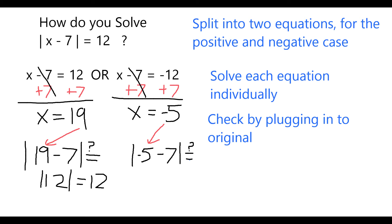In the other case, if I plug in negative 5, negative 5 minus 7 equals negative 12, and the absolute value of negative 12 is also 12. So both of those are in fact true.